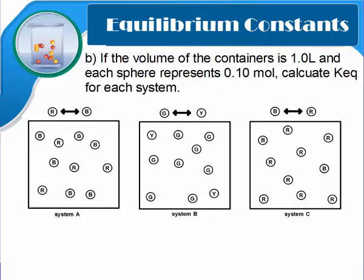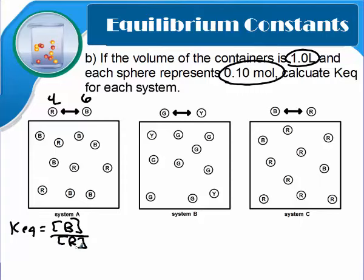Now they want you to calculate the Keq for each of the containers. The volume of the containers is 1 liter, and each of those spheres represent 0.1 moles. Let's look at system A and see how we would do that. So we need our counts for each. We have 4 and 6. First thing you want to do is write your equilibrium expression. Keq is equal to my concentration of B over my concentration of R. Since I need concentration, remember that concentration or molarity is moles over liters. Since I have a 1 liter container, then my moles should equal my molarity.